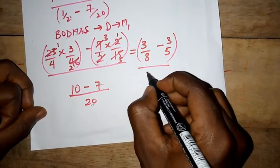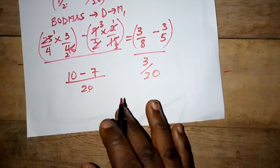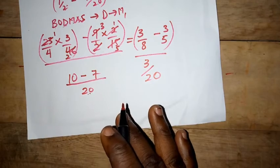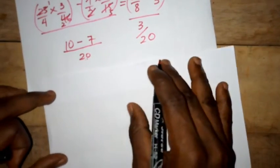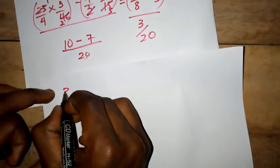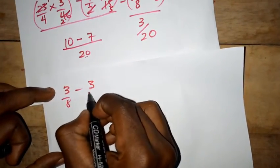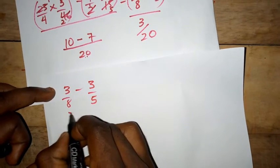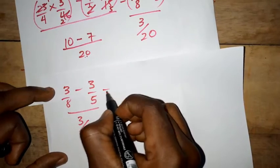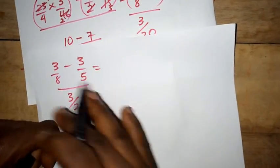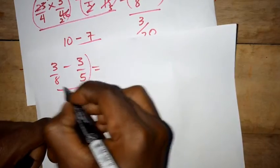From this equation we have 3 over 8 minus 3 over 5. We can deal with this top part. Let's work on this part divided by 3 over 20.